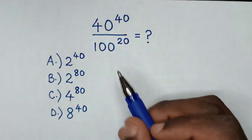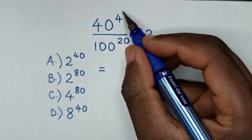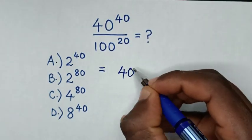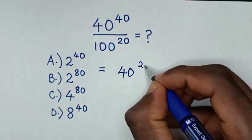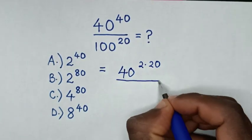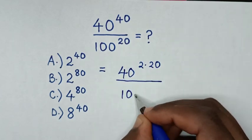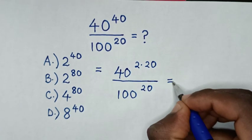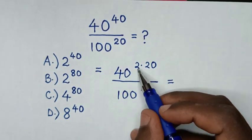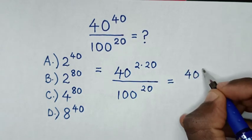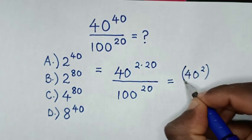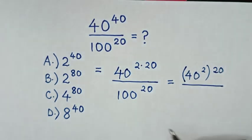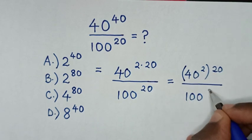From this division of exponents, it will be equal to: we make the power of 40 have the same power of 20, so 40 power of 40 is the same as 40 power of 2 times 20, then over 100 power of 20. We put 40 power of 2 inside the bracket, power of 20 outside the bracket, over 100 power of 20.